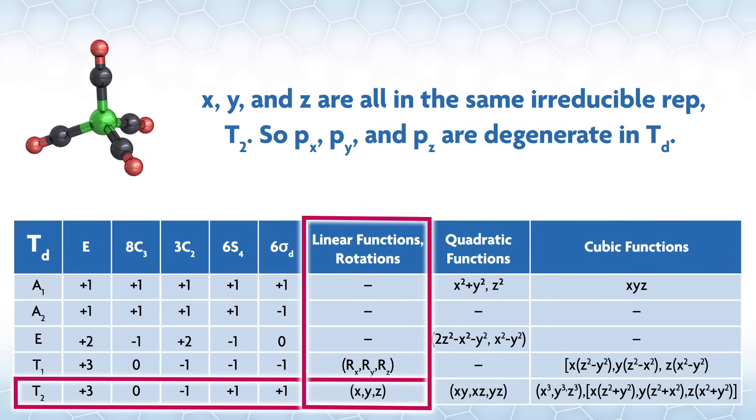Looking down the column at the linear functions, you find that x, y, and z are all in the same irreducible rep, T2. So px, py, and pz are degenerate in Td.